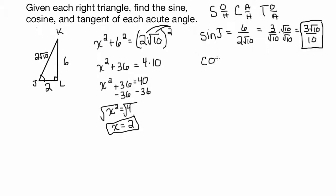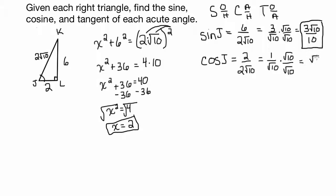Now let's move on to the cosine of angle J. Cosine is adjacent over hypotenuse. Adjacent is 2, hypotenuse is 2 root 10, so that simplifies to 1 over root 10. We must rationalize that denominator, so multiply by root 10 over root 10, and that gives you root 10 over 10.